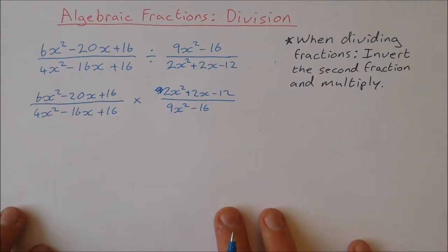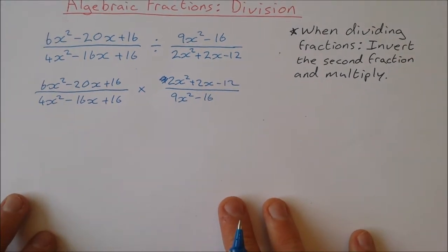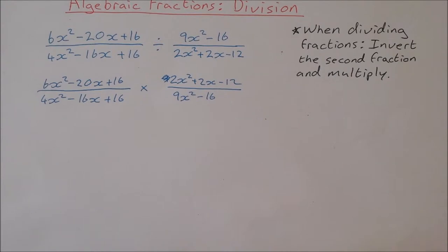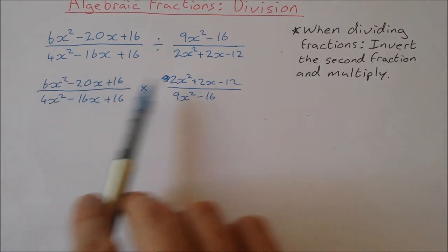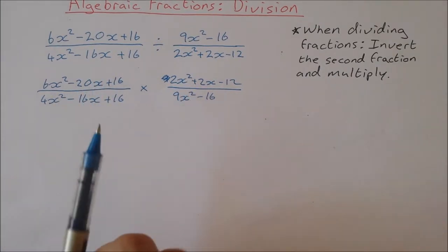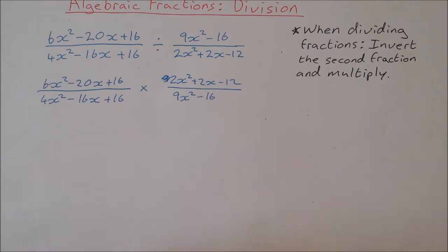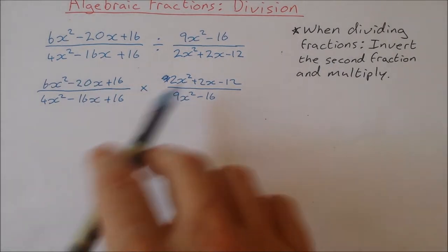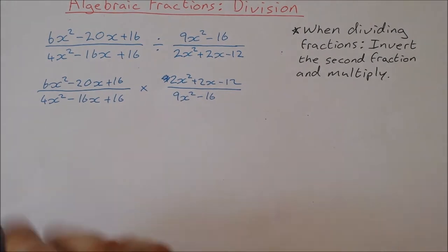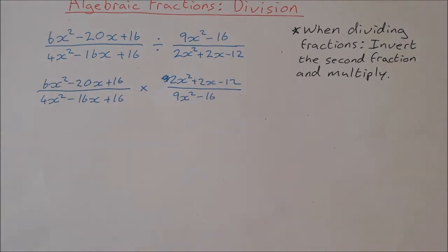To multiply these fractions, what I'm actually going to do is factorize each individual part. That's going to make it easier further down the line, and there's going to be lots of things that will cancel out with each other. So it's just going to make it easier if I factorize everything out first.